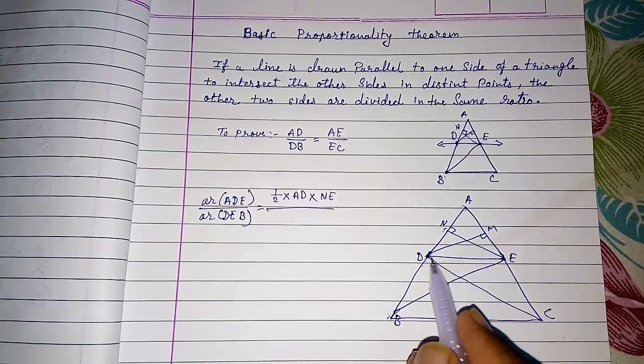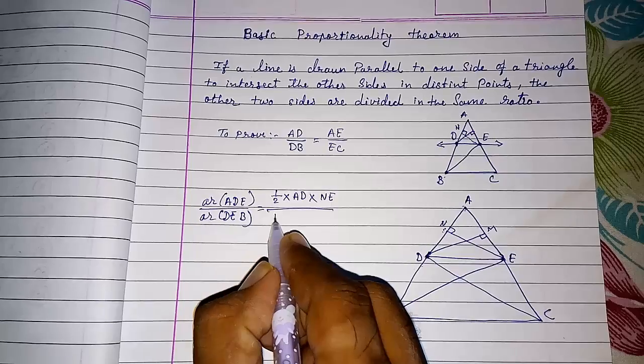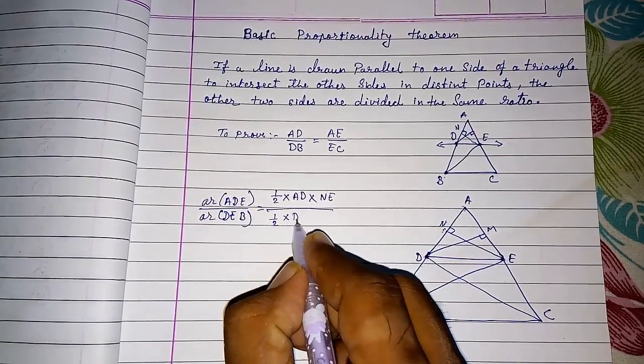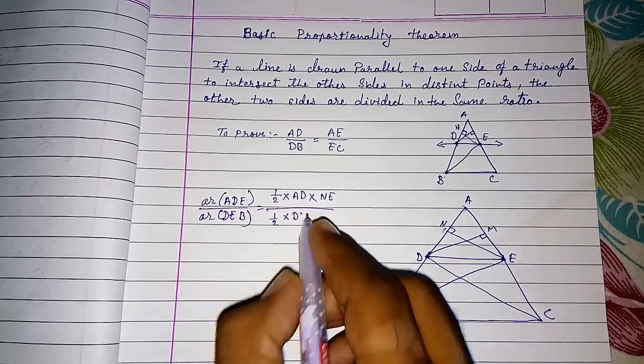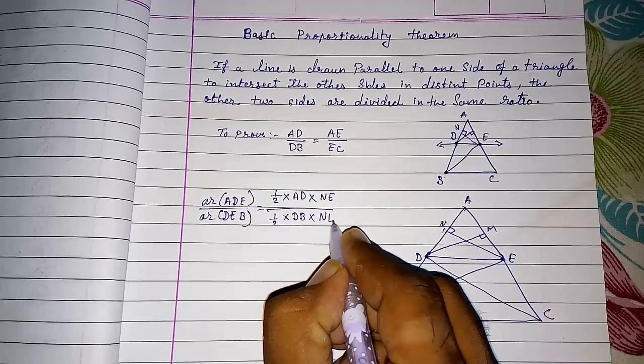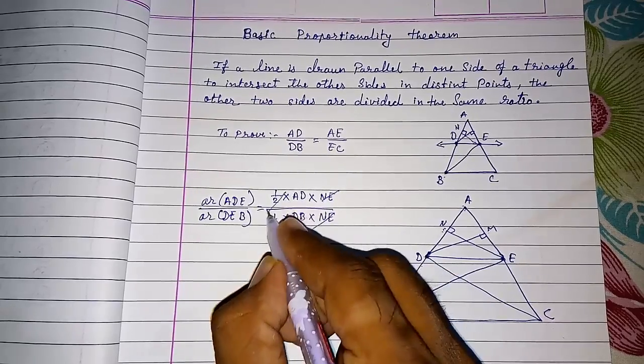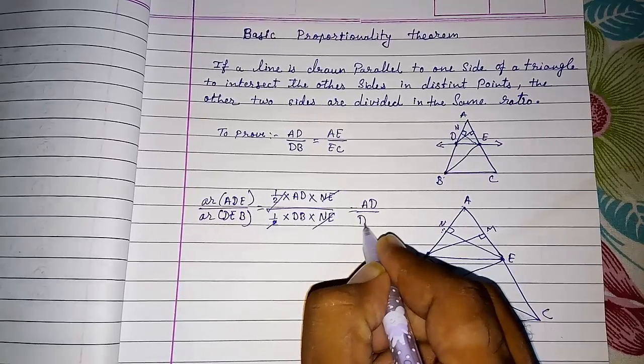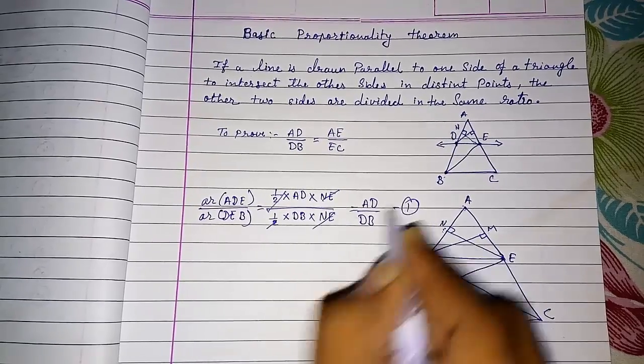And in denominator, this is the triangle. So what will be half into base is DB. So we will write DB and height outside that triangle, that is NE. We can cancel it and we will get AD by DB. This is our number one.